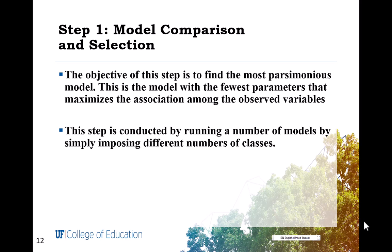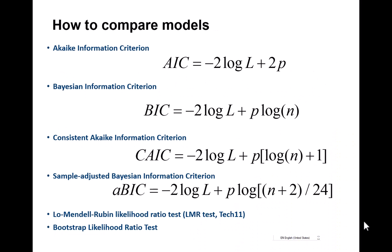Step one is to find the most parsimonious model. Typically, this is done by running models with different number of latent classes and comparing them with respect to measures of model fit, most commonly,